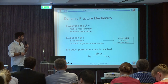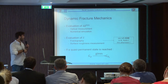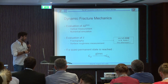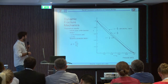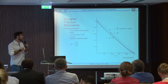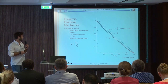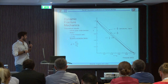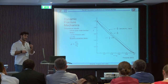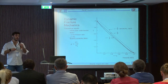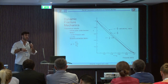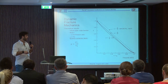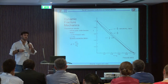After that, we evaluate this function, and if a quasi-permanent state is reached, we can obtain the critical energy release rate, called GDC, which is the material parameter we are looking for. These theoretical results from Broberg and Freund give an example of infinite plates under tension. We can see that the dynamic correction factor, which is the ratio between GDC and G0 — G0 being the energy release rate without taking into account the kinetic energy — is plotted regarding the crack velocity V, where Vr is the Rayleigh wave speed.